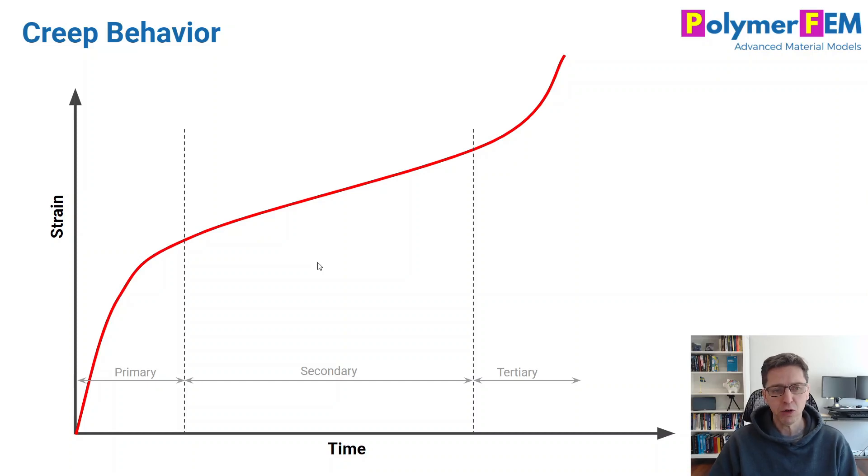Before we get into all of that, let's talk a little bit about creep in general. Creep behavior is typically described in a graph similar to this one. This is what I was taught when I was in grad school, in undergrad. If you plot the creep strain or the total strain under a creep test, there are really three different regions to it: primary creep, secondary creep, and tertiary creep. In the primary creep, the rate of creep deformation is decreasing. In secondary creep, it's a constant creep rate, and then it accelerates at the tertiary creep up to failure.